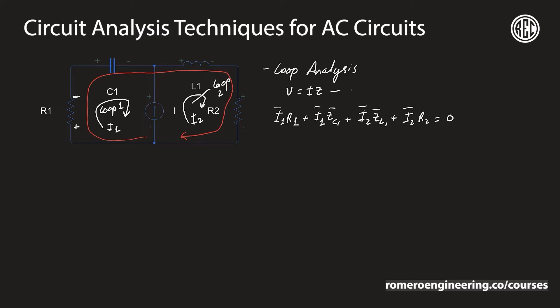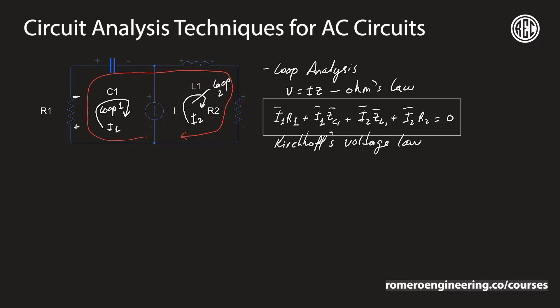We're using Ohm's law and combining it with KVL — Kirchhoff's voltage law — to come up with the loop analysis technique, which tells us the voltage drop across any loop in the circuit needs to be equal to zero. This gives us one equation containing both I1 and I2.